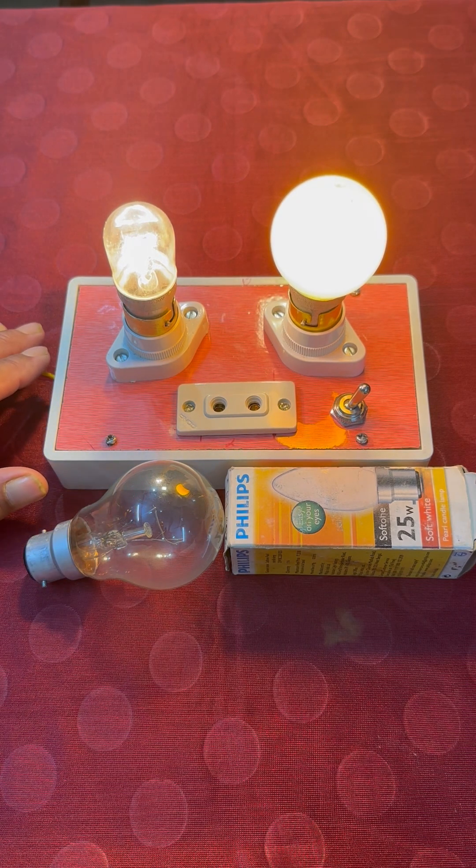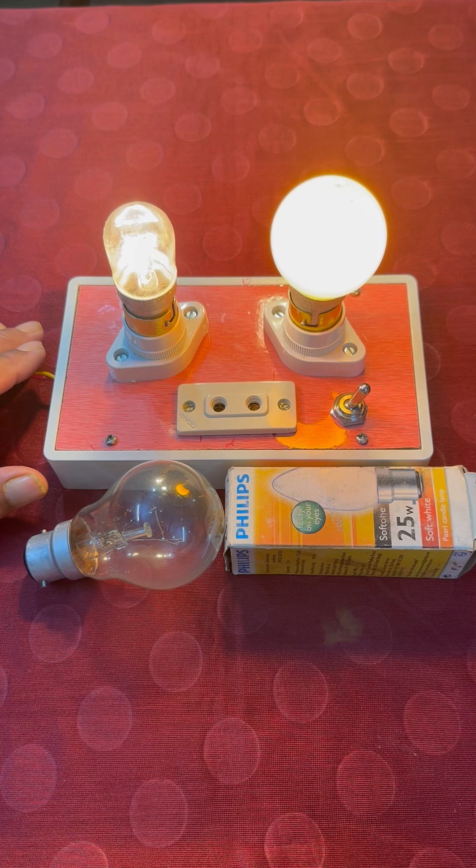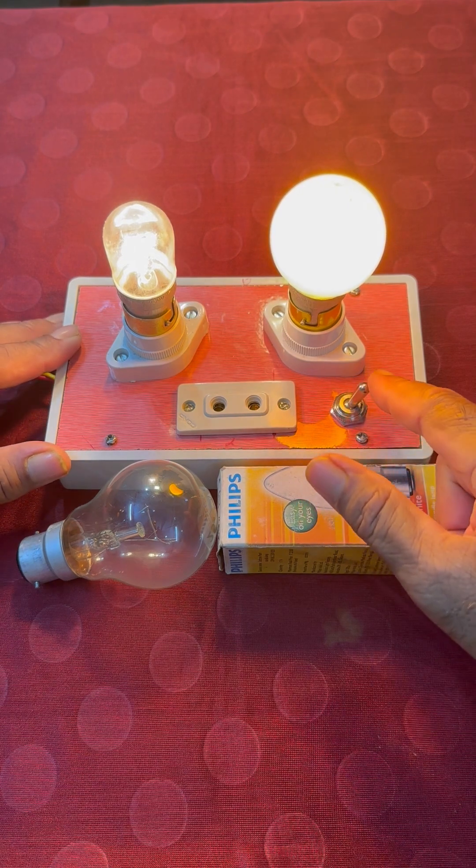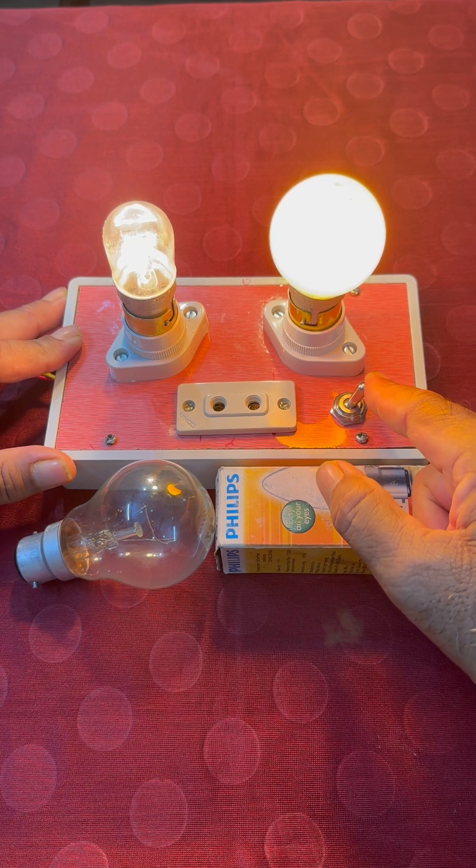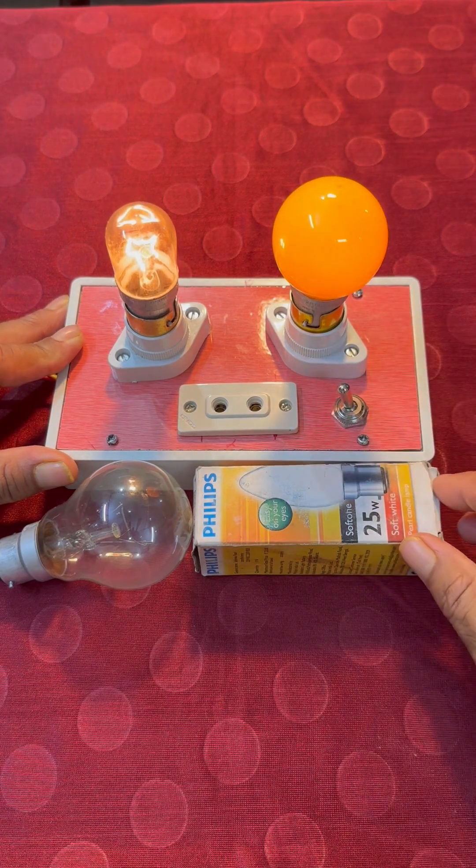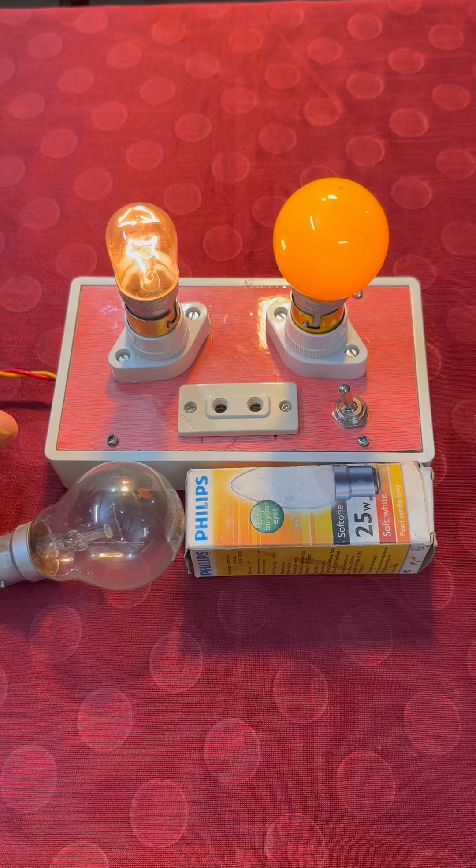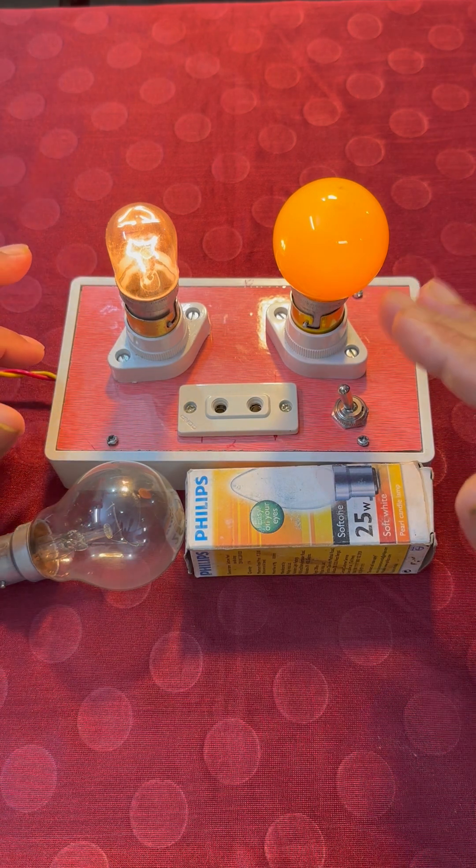But we have experienced the Diwali lights in series and we know how dim they glow. Now here also we have got a provision using this particular switch. We can make it off and we can make it also in series. Now when I make a series connection involving these two, you take a note: this is glowing half and this is glowing also half.